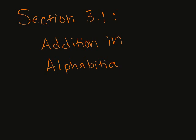We are going to start section 3.1 by talking about addition in Alphabetia. Recall that in chapter 2 we talked about Alphabetia where we have an enumeration system where we have the digits or numbers of 0, A, B, C, and D.